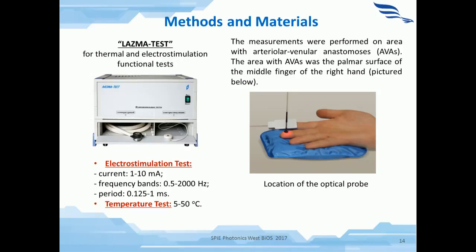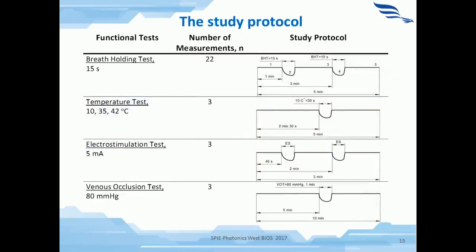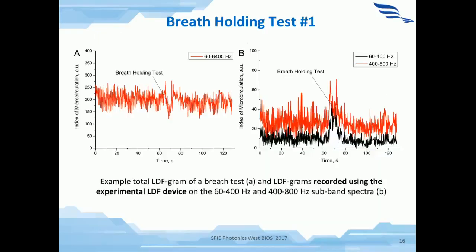The study also used a modified LDF device for simultaneous recording of LDF signals in different frequency bands: 310–1000 Hz for registration of blood microcirculation and 200–2200 Hz for registration of lymph microcirculation. Electrostimulation and temperature tests were conducted by a special block LASMA test. We evaluated the index of microcirculation for different frequency bands to identify the relationship between blood flow and lymph flow, using various functional tests: breath holding test, temperature test, electrostimulation test, and venous occlusion test.